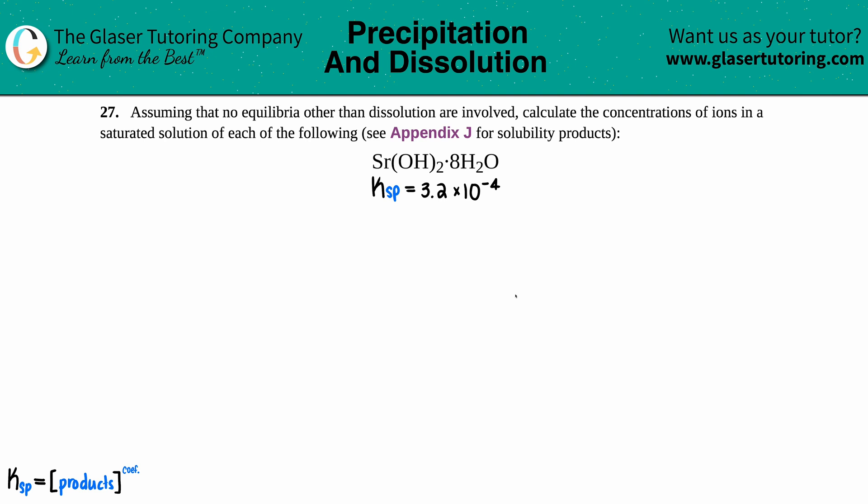Number 27. Assuming that no equilibria other than dissolution are involved, calculate the concentrations of the ions in a saturated solution of each of the following, and then see Appendix J for those solubility products.